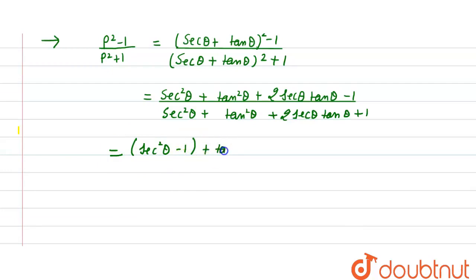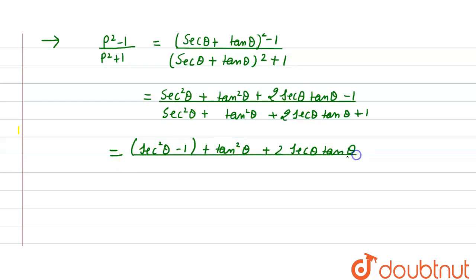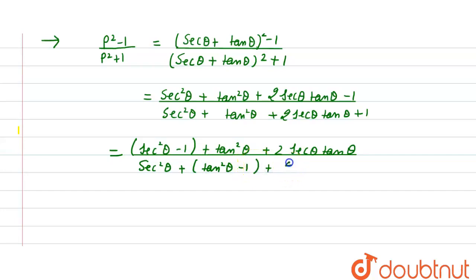Rearranging the numerator, we get (sec²θ - 1) + tan²θ + 2 sec θ tan θ.